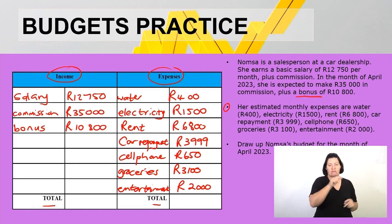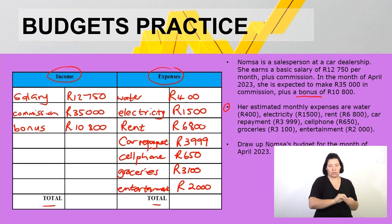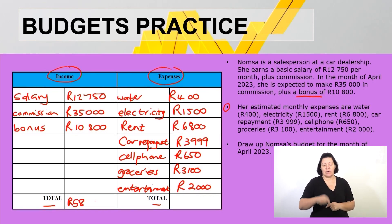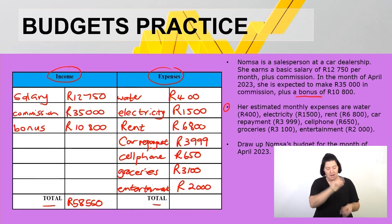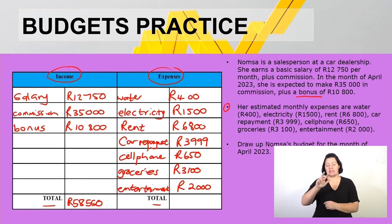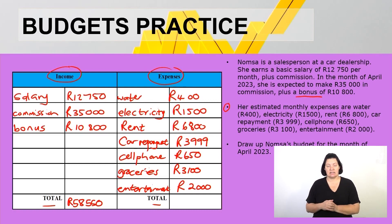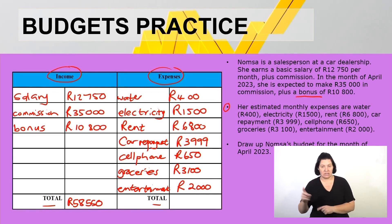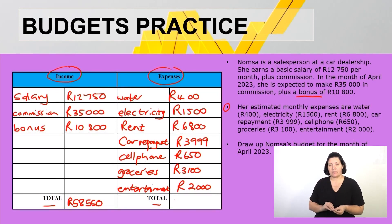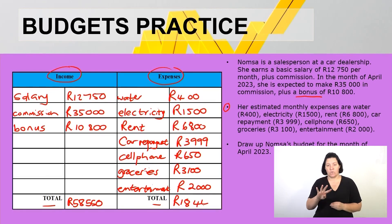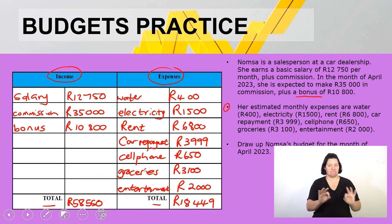Adding all income: 12,750 rand plus 35,000 rand commission plus the bonus of 10,800 gives a total income of 58,550 rand for the month. Adding all expenses: 400 plus 1,500 plus 6,800 plus 3,999 plus 650 plus 3,100 plus 2,000 gives a total of 18,449 rand. Nomsa's income is far more than her expenses, which is positive.